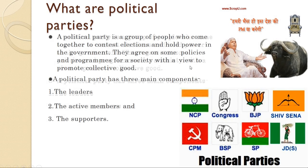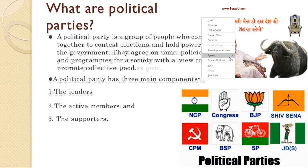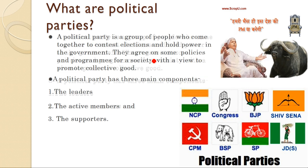What are political parties? A political party is a group of people who come together to contest elections. Their primary aim is to contest elections and thus hold power. They agree on some policies and programs for society with a view to promote collective goodness.